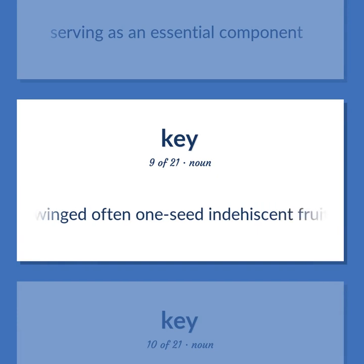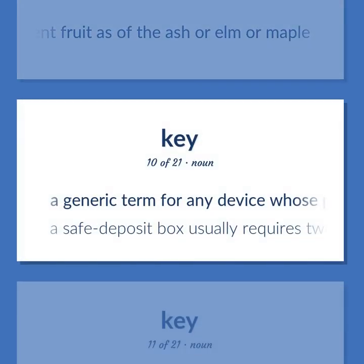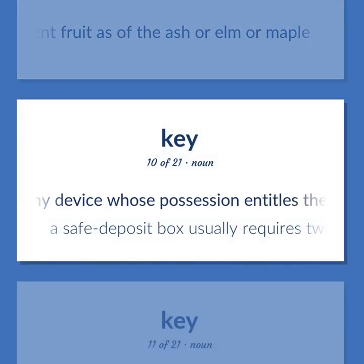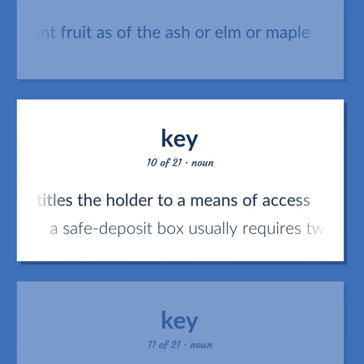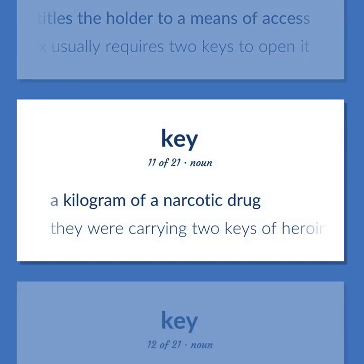A winged often one-seed indehiscent fruit as of the ash or elm or maple. A generic term for any device whose possession entitles the holder to a means of access. A safe deposit box usually requires two keys to open it. A kilogram of a narcotic drug. They were carrying two keys of heroin.